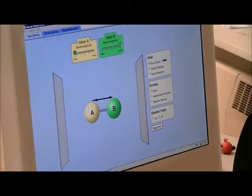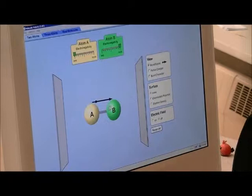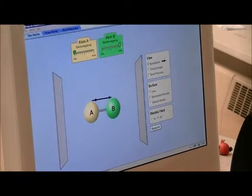What that means is that if you make atom B really electronegative and atom A really low in electronegativity, you can actually see this arrow, which is showing where the electrons are moving and, therefore, how polar the bond is.